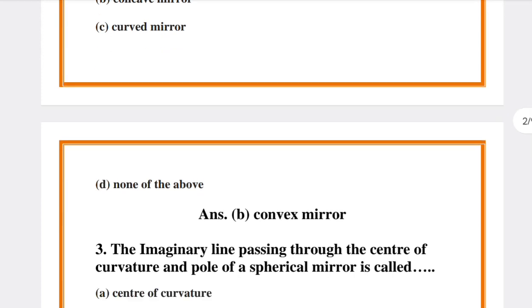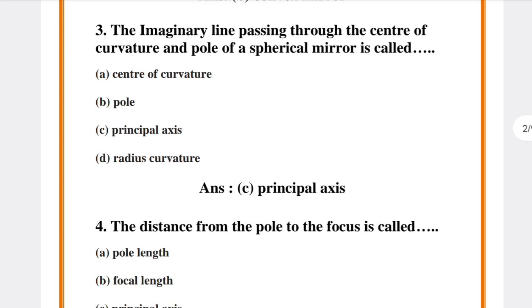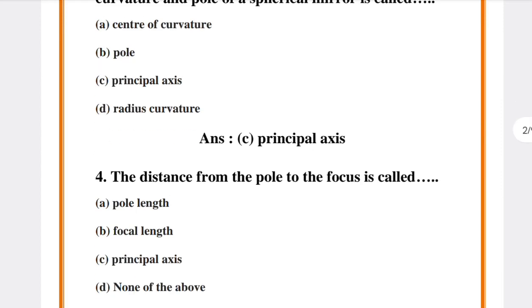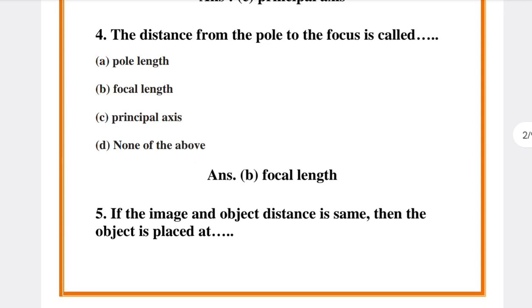Convex Mirror Question 3. The Imaginary Line Passing Through the Center of Curvature and Pole of a Spherical Mirror is called Answer C. Principle Axis Question 4. The Distance from the Pole to the Focus is called Answer B.